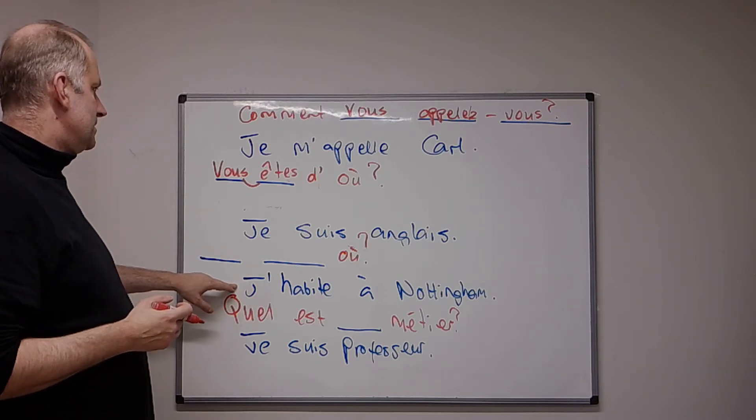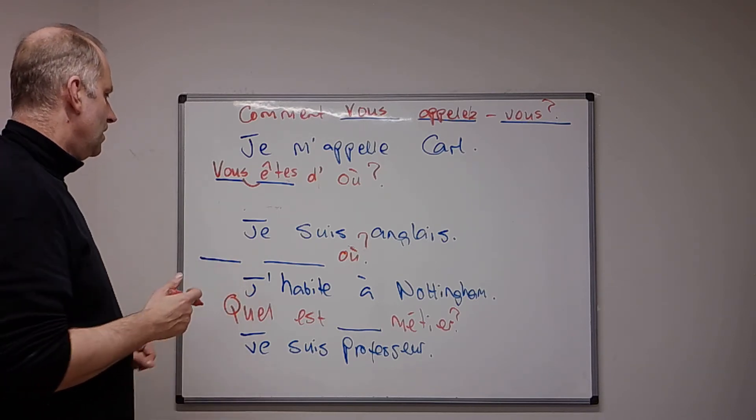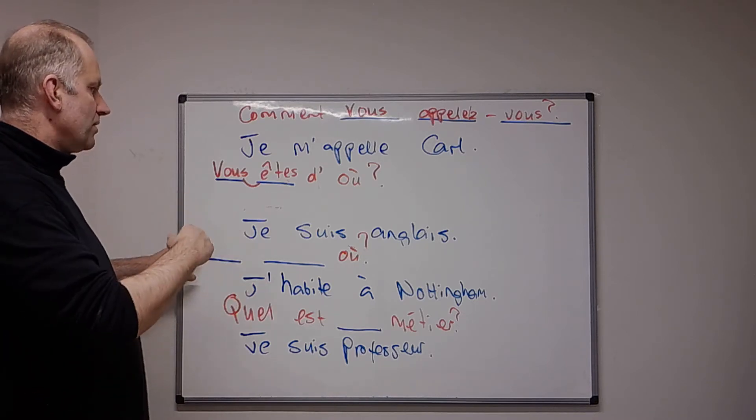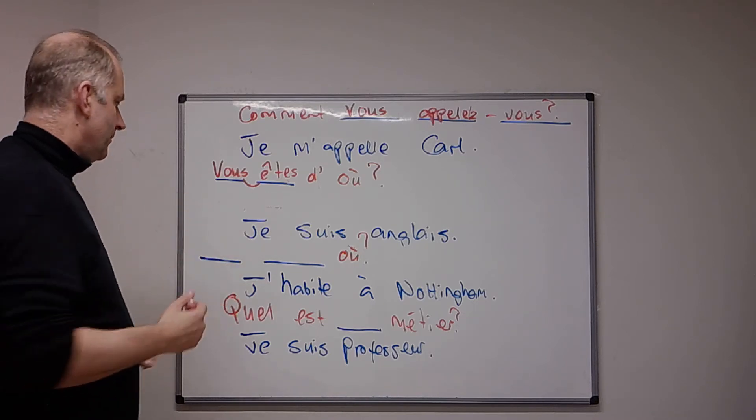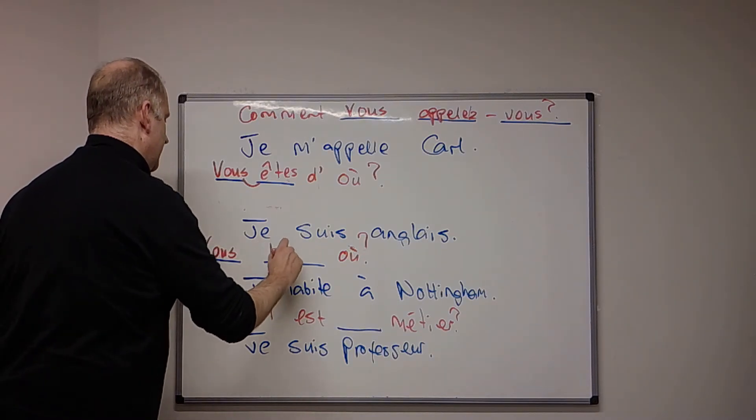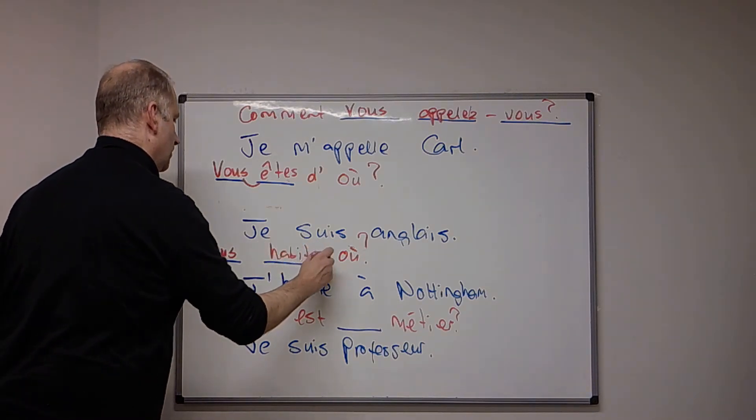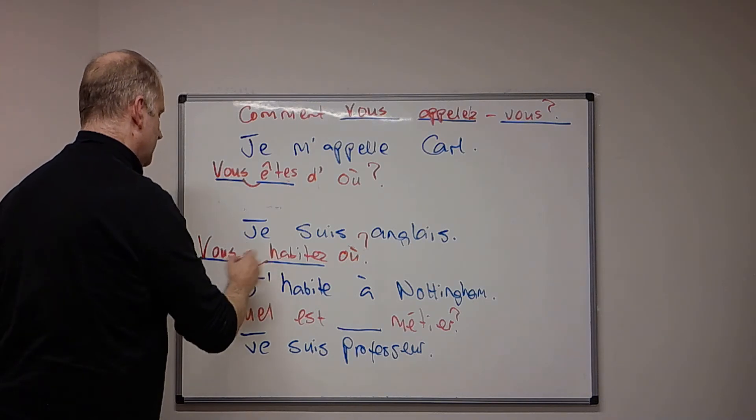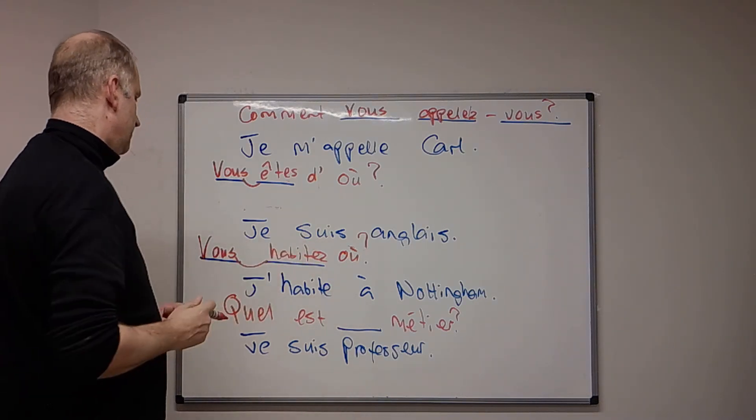And then the next one, j'habite, and nothing else. So, remember, before it was tu habites où, so for the vous form, it's vous habitez où, and again, got the liaison here, vous habitez où.